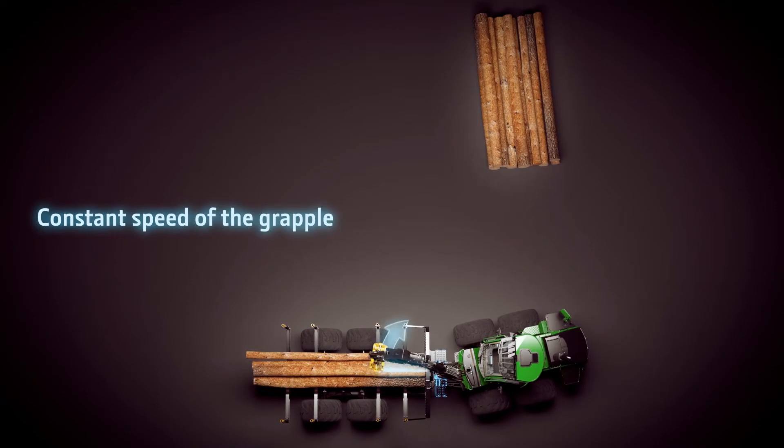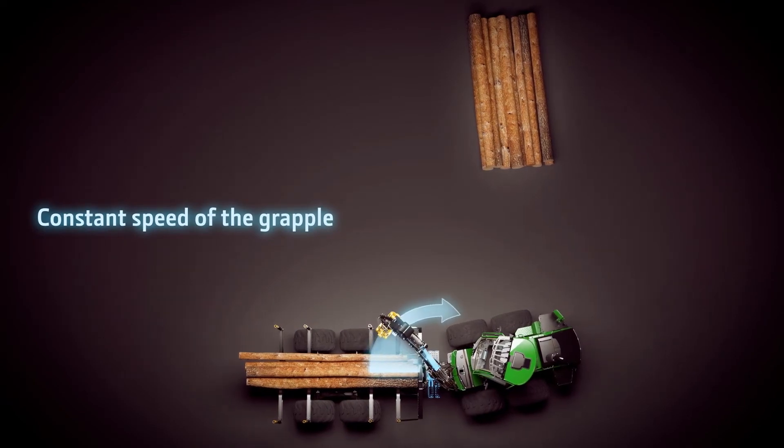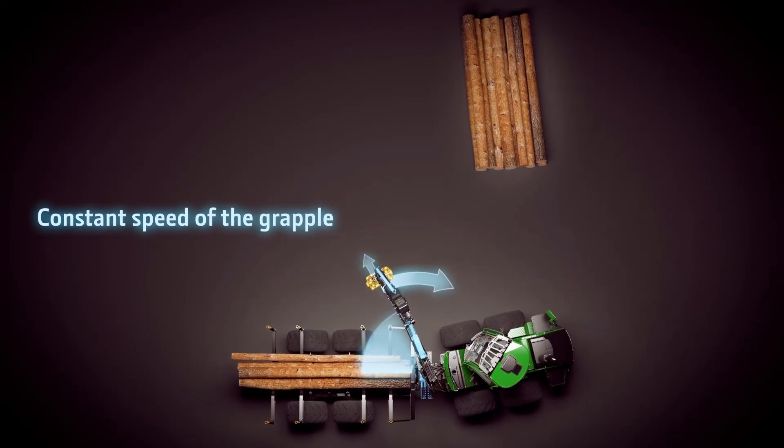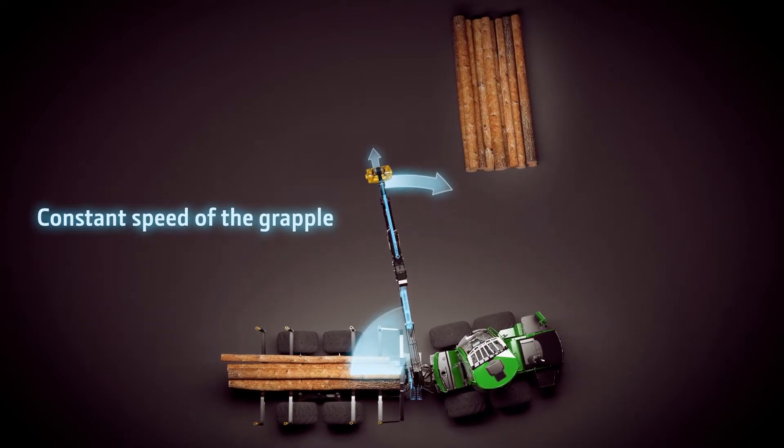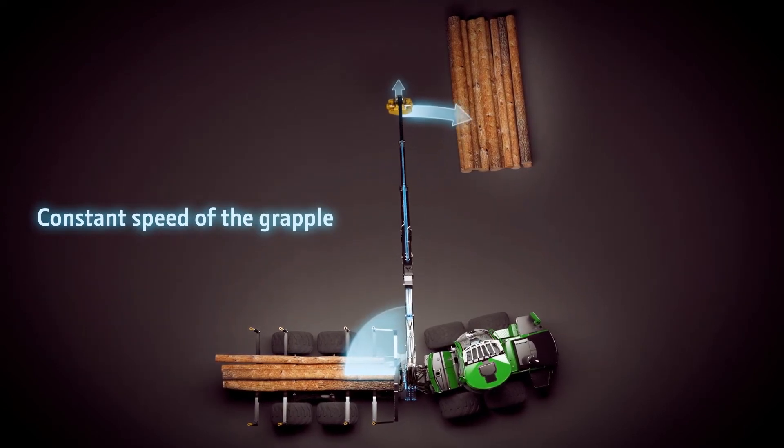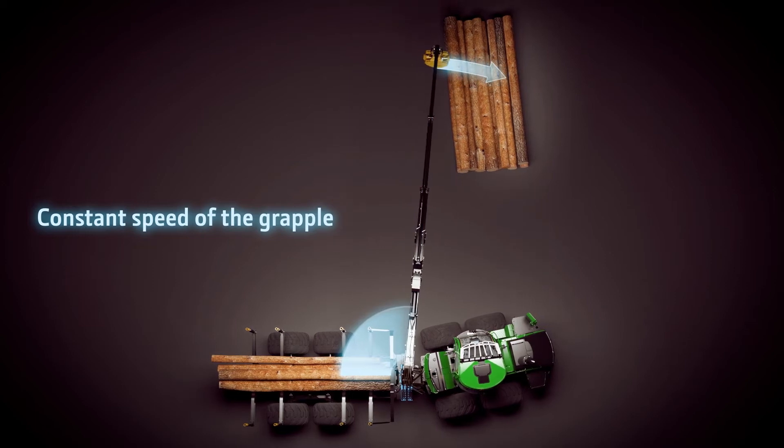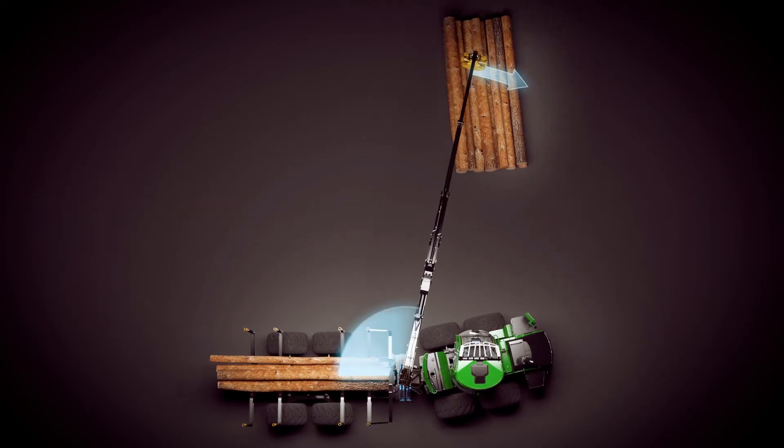The new version of Intelligent Boom Control software improves the precision of the grapple, especially with long reaches. The same amount of mini-lever movement always produces the same speed to the grapple, no matter how long the reach.